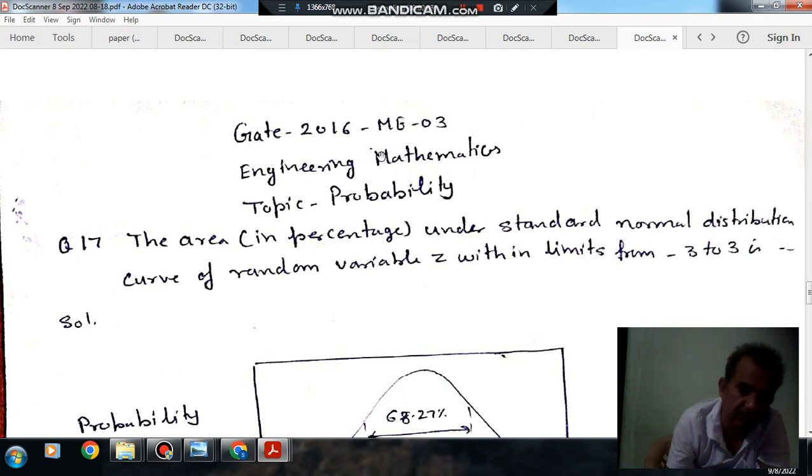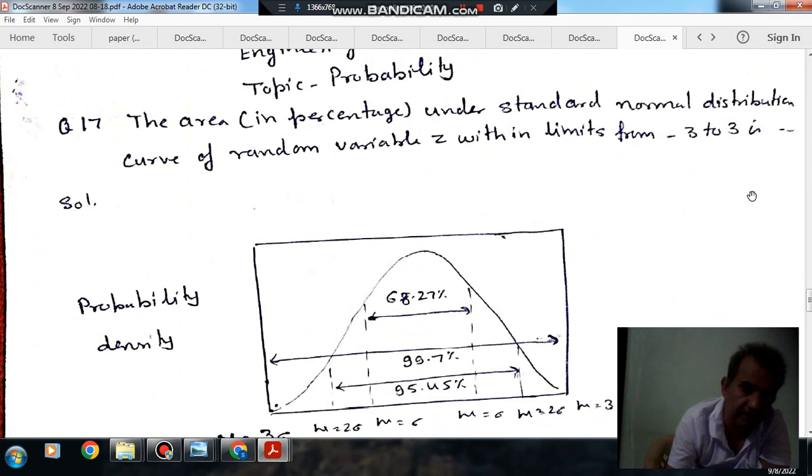Question number 17 from GATE 2016 ME-03: The area in percentage under standard normal distribution curve of random variable Z within limits from minus 3 to 3 is?